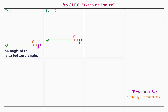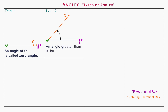Type 2: Acute angle. On rotating the terminal ray in anti-clockwise direction as shown on the screen, the angle formed is called an acute angle. An angle greater than zero degrees but less than 90 degrees is called an acute angle.